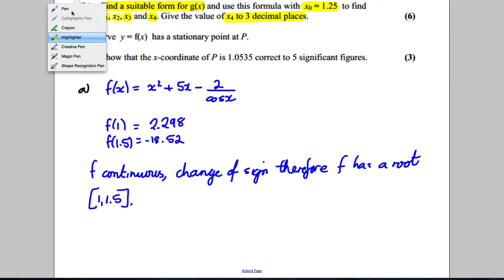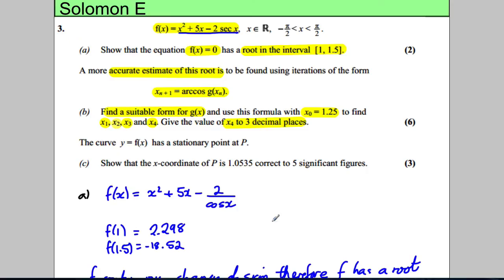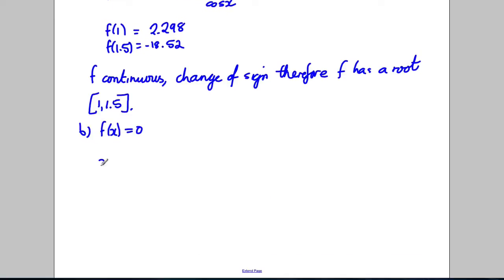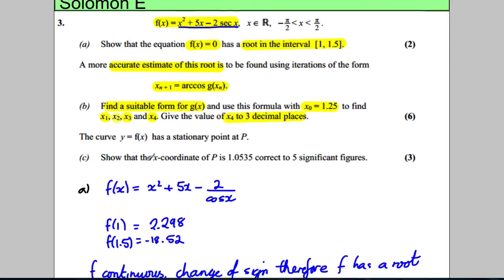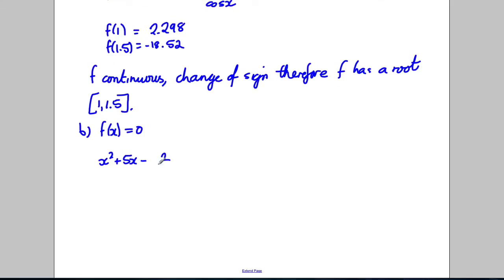Now the formula, remember what we're doing here. Okay so the first thing we're doing is we're solving f of x is equal to 0. So what we're solving is we're solving x squared add 5x subtract 2 over cosine of x is equal to 0.